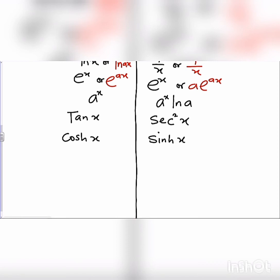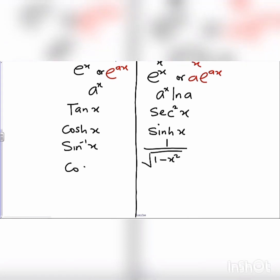To differentiate sin inverse of x, it gives us 1 over square root of 1 minus x squared. When we have cos inverse of x and we differentiate this, it will give us minus 1 over square root of 1 minus x squared.